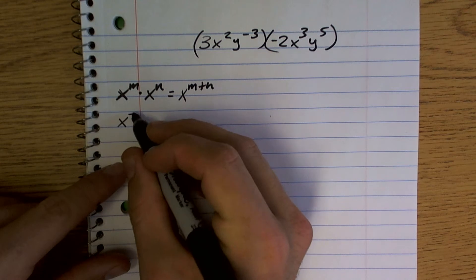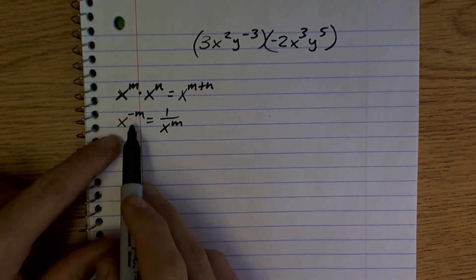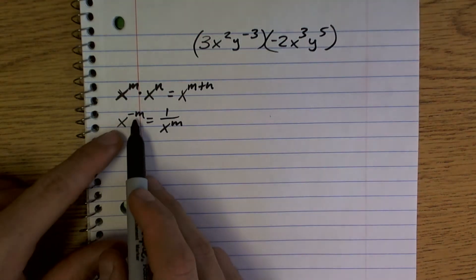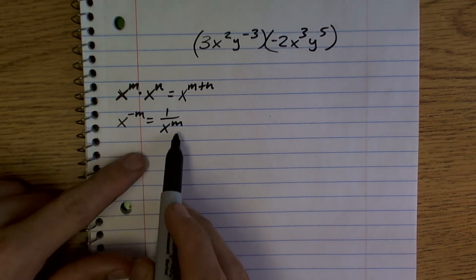If I have x to the negative m, that equals 1 over x to the m. So if you have a number raised to a negative exponent, we've got to make sure we put it now as, if that's in a numerator, you've got to now put it as a denominator.